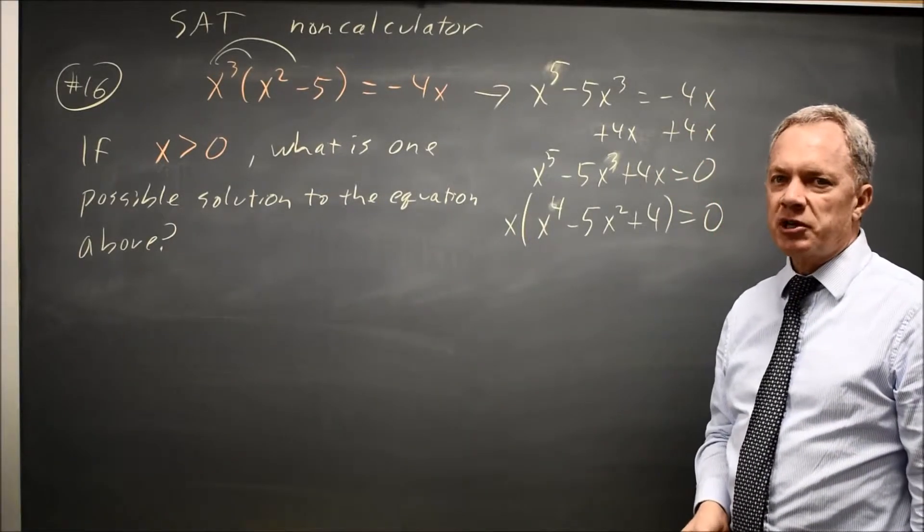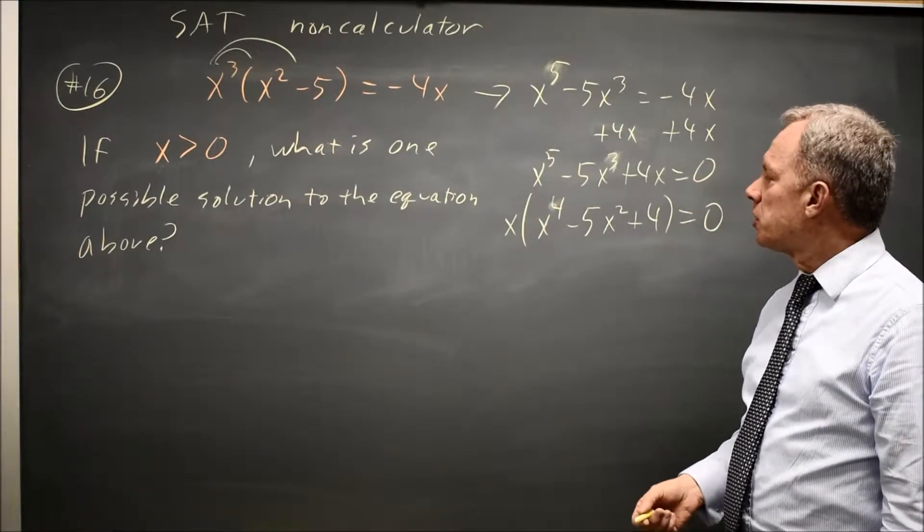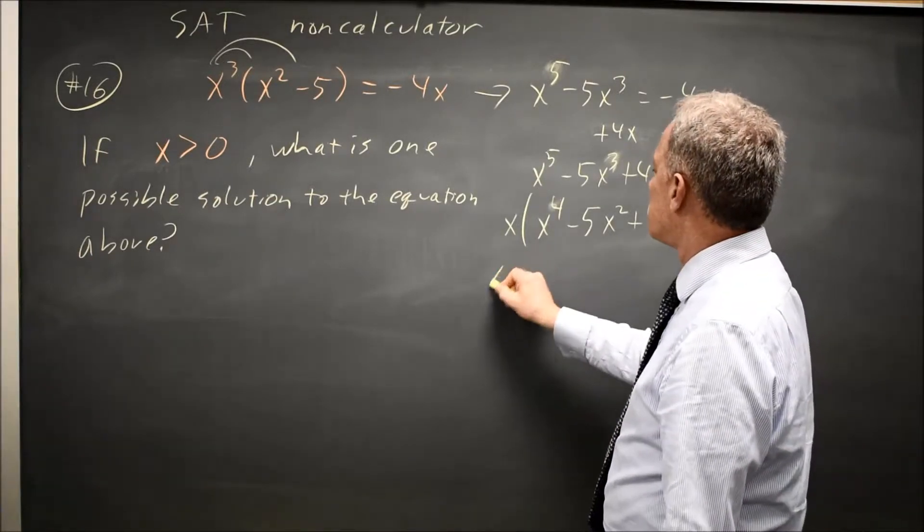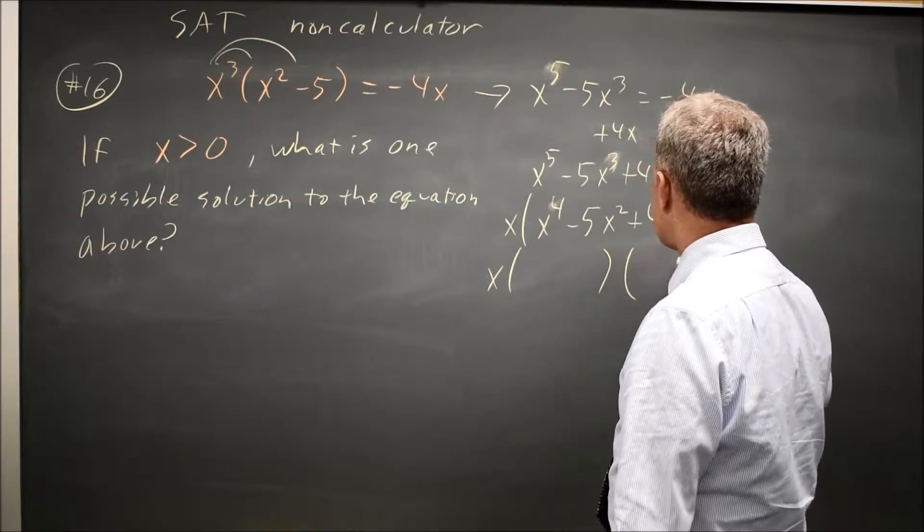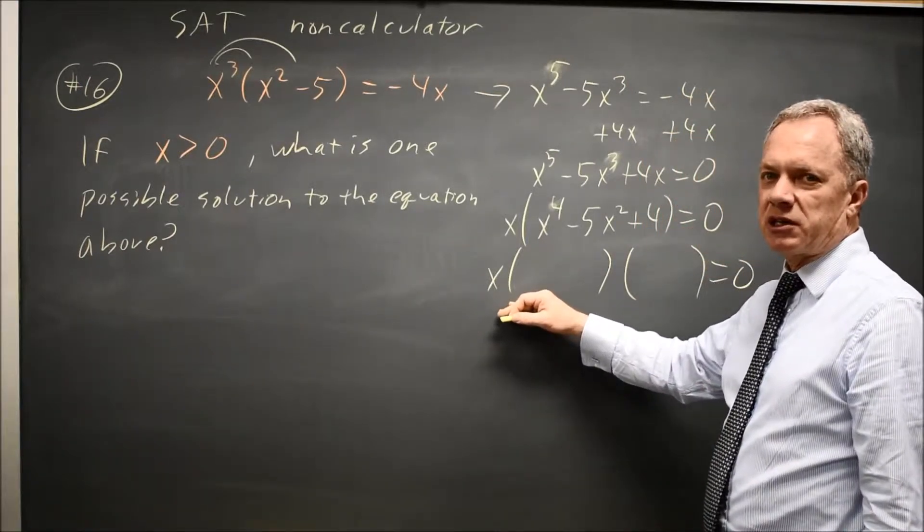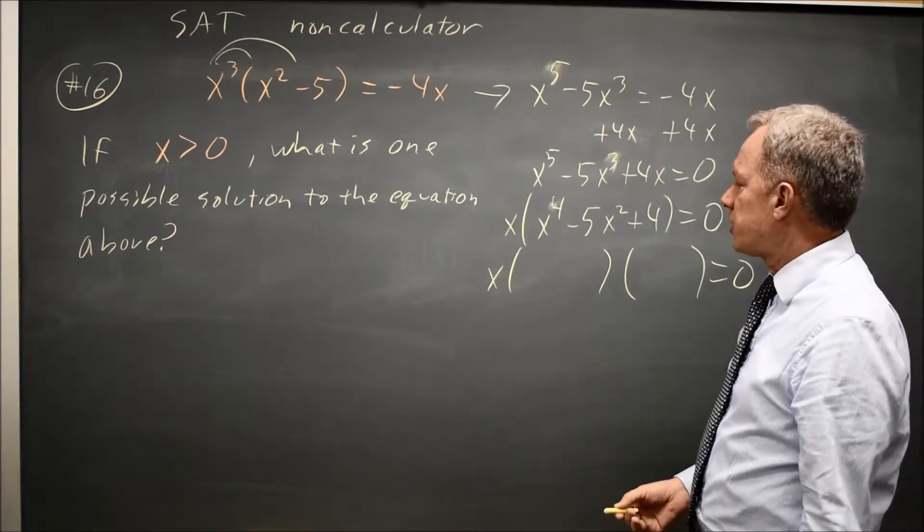Now this is a familiar form. It's like a quadratic, but a quadratic in x squared. So I know how to factor this. And I want to factor because if I can factor into a product that equals zero, then one of the factors will be zero.